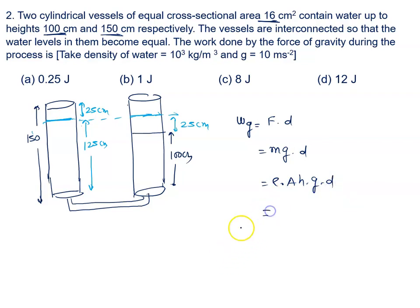What is the density? Density is given to us as 10³. Area of cross-section is given 16 cm². So we will write 16 × 10⁻⁴ into h. How much is the mass? 25 cm.